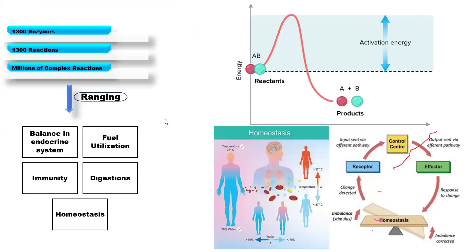In a human being, there are over 1,300 enzymes, and each of these enzymes is responsible for catalyzing a particular reaction. Therefore, 1,300 enzymes catalyze 1,300 reactions. The number of enzymes reflects the number of reactions taking place in a living organism.